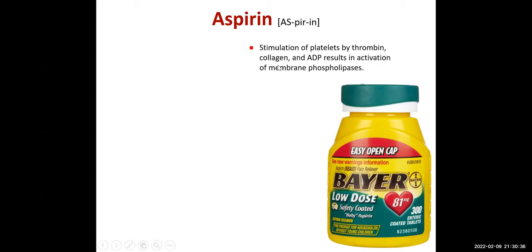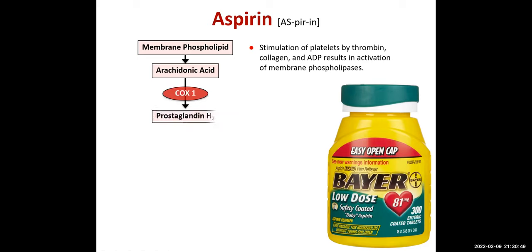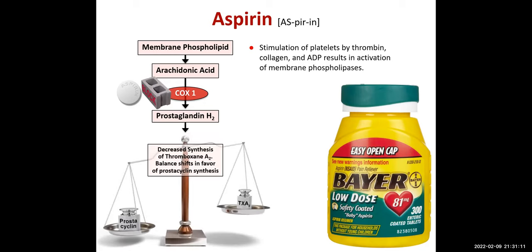Stimulation of platelets by thrombin, collagen, and ADP results in activation of membrane phospholipids. Membrane phospholipid is broken down to arachidonic acid, COX-1 acts on that to produce prostaglandin H2, and thromboxane synthase produces thromboxane A2. When you give aspirin, it blocks COX-1 in platelets. When COX-1 is blocked, metabolism is diverted toward prostacyclin production — we get a small amount of thromboxane A2 and a larger amount of prostacyclin, which prevents platelet aggregation.